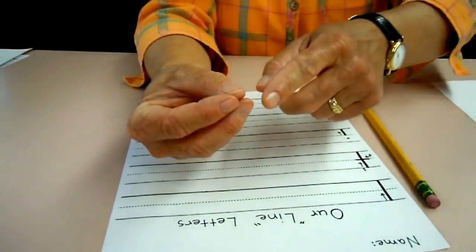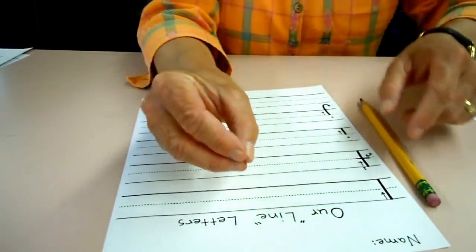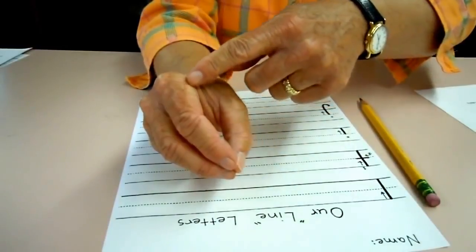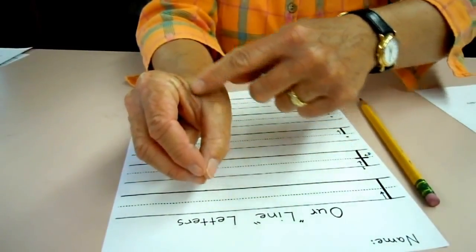This is called a tripod grip because tri means three, but we also call it a raindrop because it should make a nice raindrop shape.